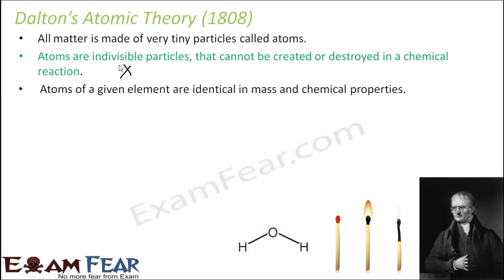Atoms of a given element are identical in mass and chemical properties. For example, atoms of sodium or oxygen or chlorine — all atoms of sodium will have identical mass and chemical properties. For example, if you take 10 atoms of sodium, all these 10 atoms will have identical mass and chemical properties.